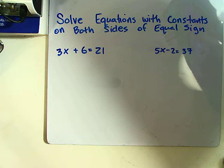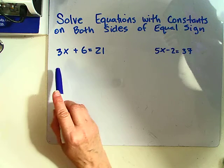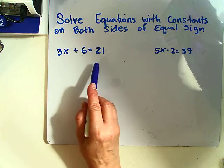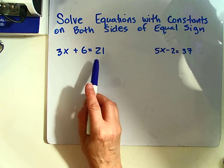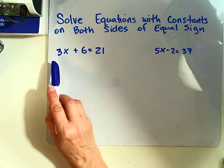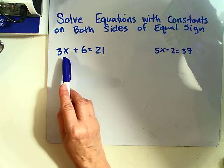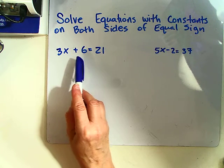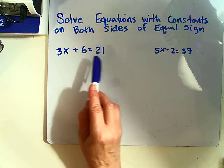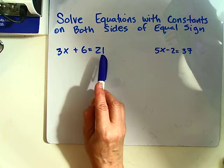In this first situation, we have 3x plus 6 equals 21. You might notice that there are a couple of operations going on here. We've got 3 times x, and we're adding 6, and then we have our number on the other side.